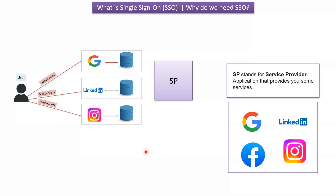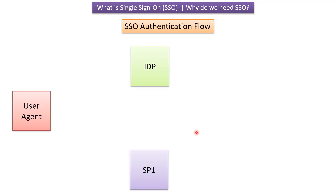In the SSO flow, the user sends credentials to the IdP only one time. The IdP validates whether the credentials are valid or not. If valid, the IdP produces an identity for the user. That same identity is shared to different service providers or applications so that the user can log in only one time and access different service providers without logging in again and again.